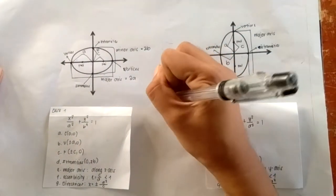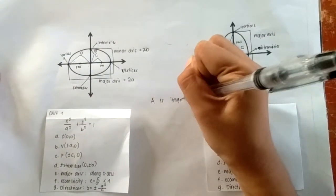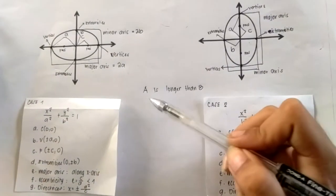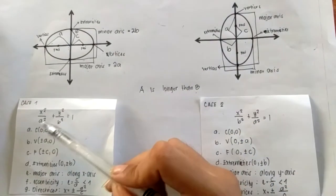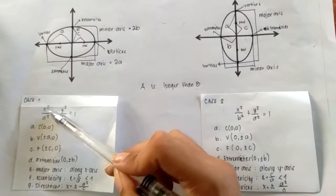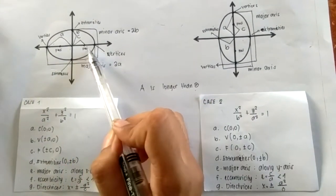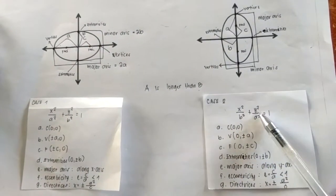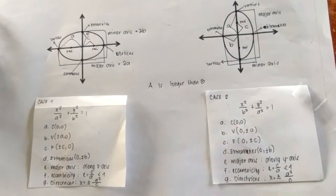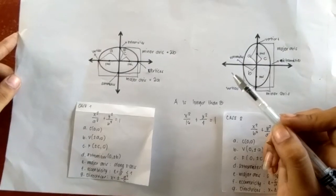What I want you to remember is that A is longer than B. So if your A is under your x, then that means your ellipse is elongated at the horizontal axis. While on the other hand, when your A is under your y, then that implies that your ellipse is elongated at the vertical axis.